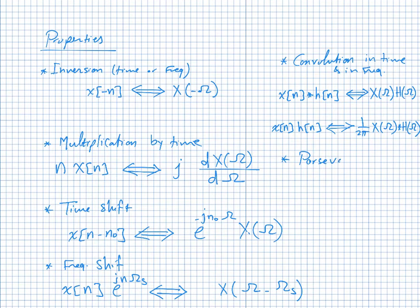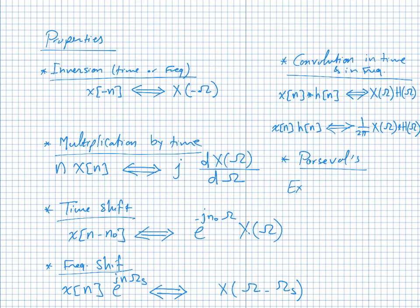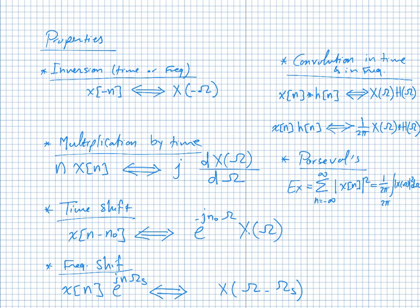Parseval's theorem: the energy of a signal equals Σ_{N=−∞}^{∞} |X(N)|² in time, which equals (1/2π) ∫_{2π} |X(Ω)|² dΩ in frequency. Integrating |X(Ω)|² over one period of 2π and multiplying by 1/(2π) gives the signal's energy from the frequency domain.